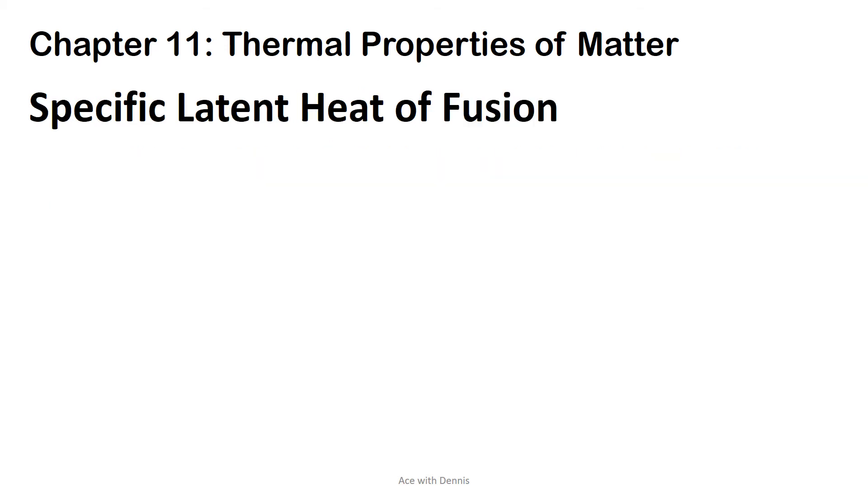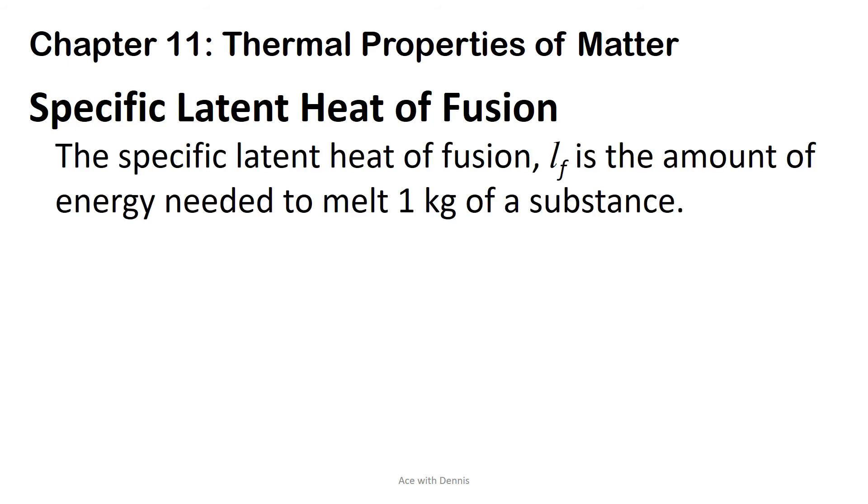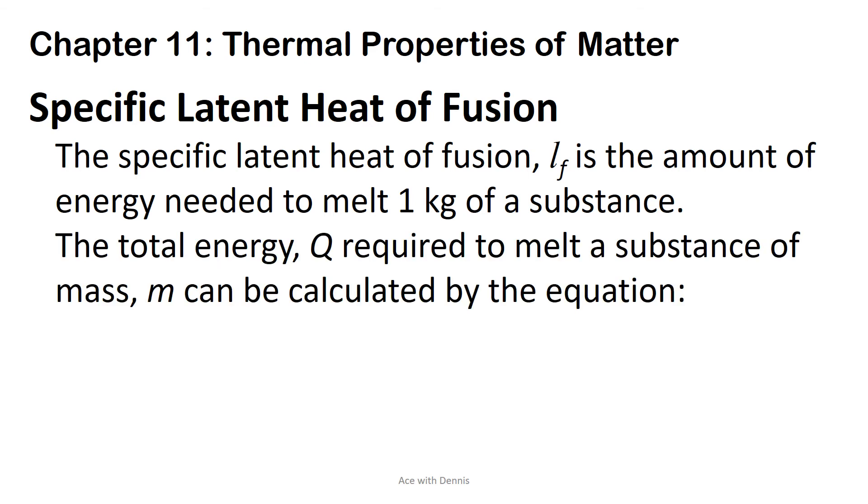Specific latent heat of fusion. The specific latent heat of fusion, LF, is the amount of energy needed to melt one kilogram of a substance. The total energy Q required to melt a substance of mass m can be calculated by the equation Q equals mLF.